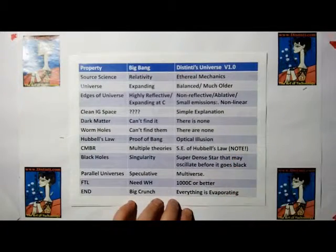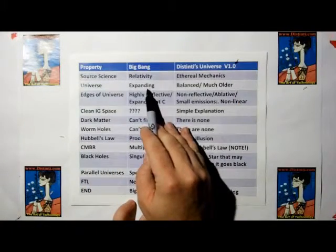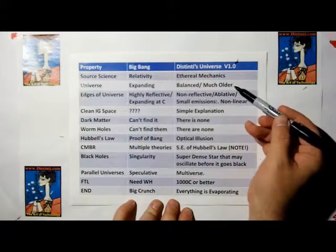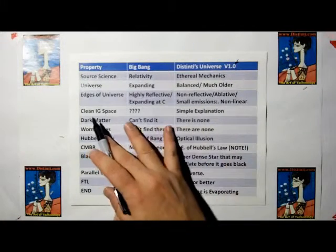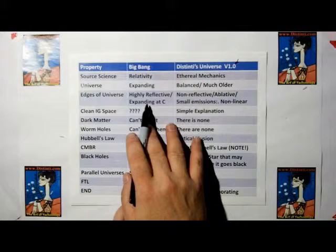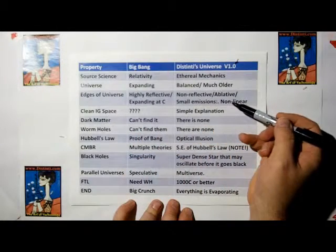I had not intended to get ethereal mechanics into the business of cosmology, but after doing my research on Olber's paradox, I kind of say we need something now. All right, so Distinti's universe in its version 1.0. In the Big Bang Theory, the universe is expanding. In Distinti's universe, the universe is much balanced and much older. However, the edges of the universe in Big Bang is highly reflective, expanding at sea. Distinti, it's non-reflective. It's more like an ablative edge with very small emissions, mostly due to non-linearity.